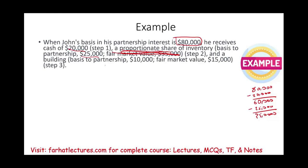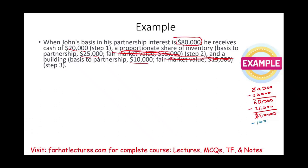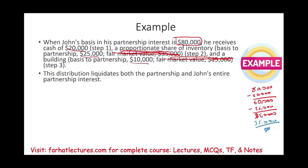Then John receives a building with a basis of $10,000 and fair value of $15,000. He still has $35,000 remaining outside basis. We're giving him an asset with a partnership basis of $10,000 — but if we allocate only $10,000, we'd have $25,000 remaining. We can't have that — this is a liquidating distribution, not a current one. So the building will take a basis of $35,000 to bring the outside basis down to zero.